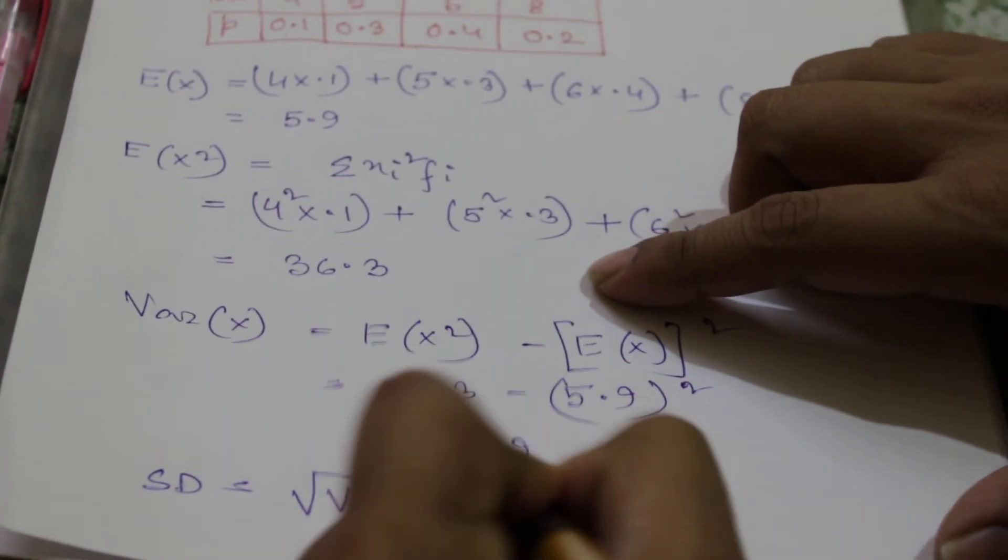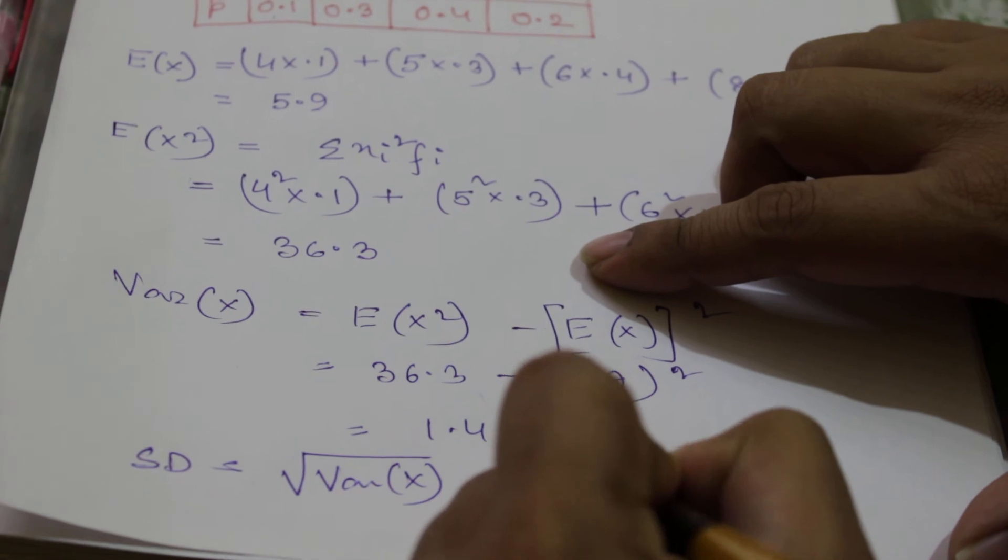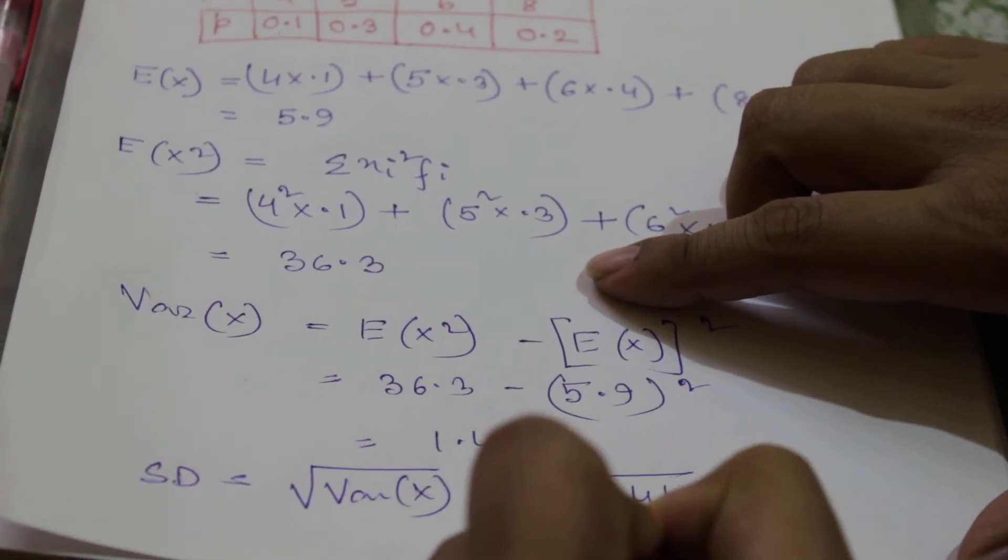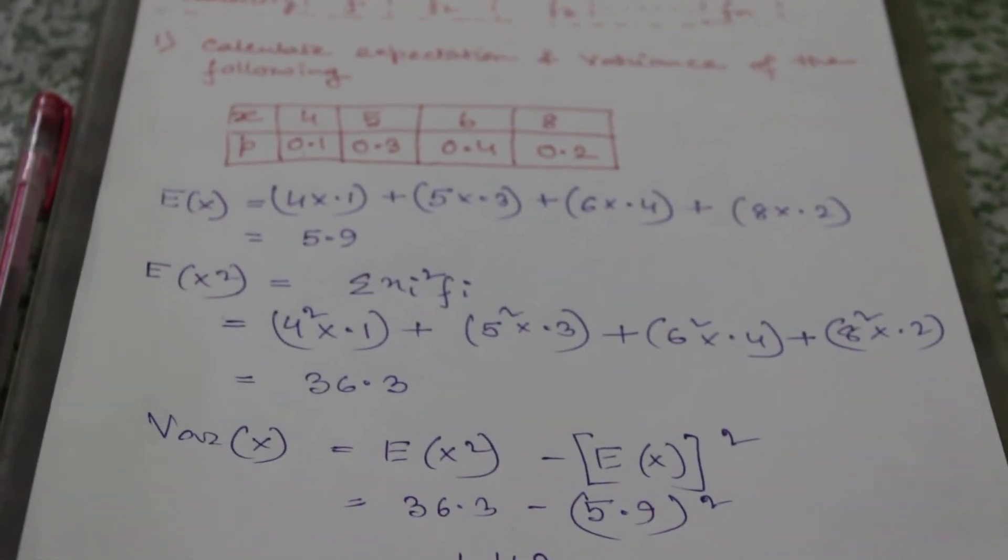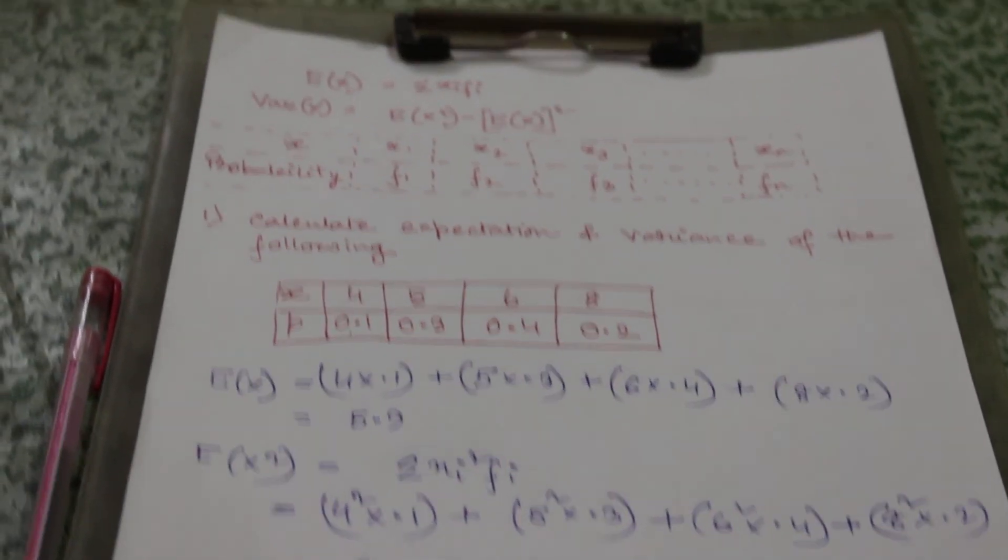So that means root over 1.44, almost equal to 1.2. Understood? So that's all. If you like this video, please hit the like button below.